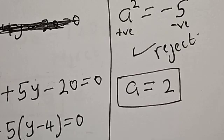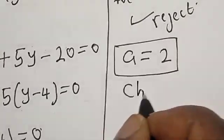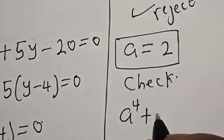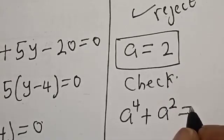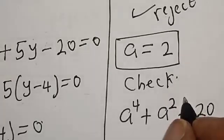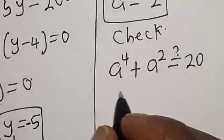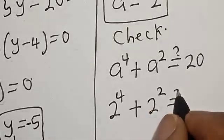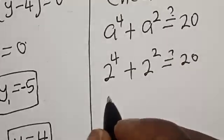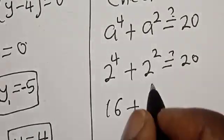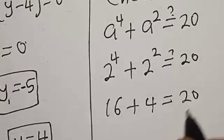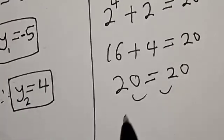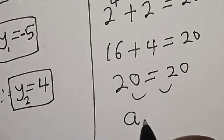Let's check to confirm if our answer is right or wrong. We have the given equation: A raised to power 4 plus A square must equal 20. Now A is 2: 2 raised to power 4 plus 2 square. 2 to the power 4 is 16, plus 2 square is 4, equals 20. The left hand side equals the right hand side. We satisfy the given equation at A equal to 2.